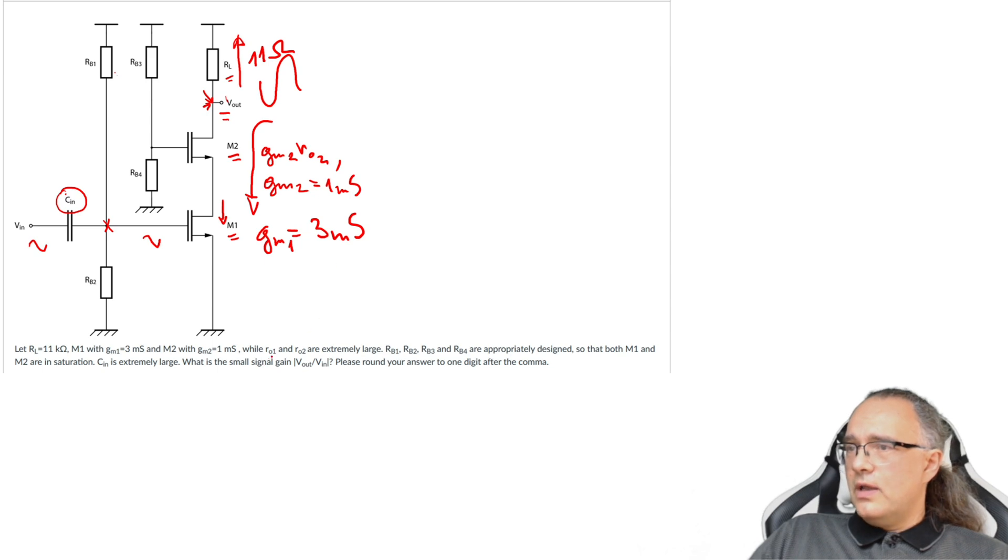While R-O1 and R-out2 are extremely large. So we can ignore the channel length modulation effect. This means that the intrinsic gain GM2·Rout2 of M2 will be extremely large. So this resistance from Vout to ground will be extremely large. So the effective resistance at the output will be dominated by the 11 kΩ load resistor.